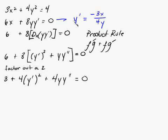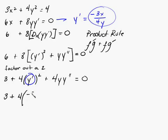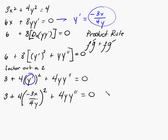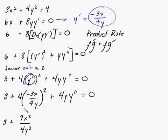So we'll go ahead and replace y' with negative 3x over 4y. So we have 3 plus 4 times (negative 3x over 4y)² plus 4y·y'' equal to 0. This right here is going to become 9x² over 16y², and the 4 cancels with the 16, so it just becomes 9x² over 4y². If that went by a little too quick for you, you can add in those other steps and you'll eventually get this.